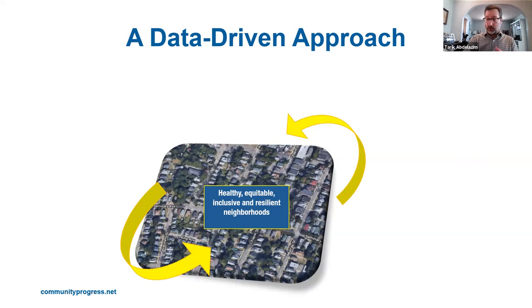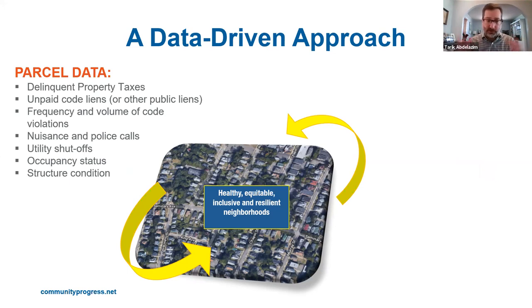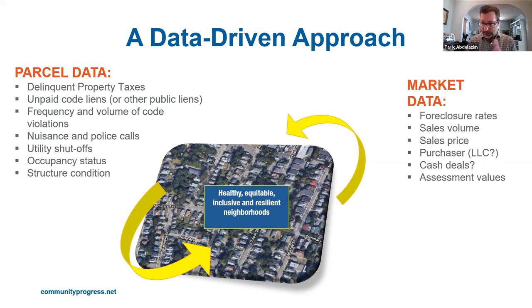Our approach is also data-driven. There are three buckets of data we work with communities on. First, we need to understand parcel data — if we can aggregate, analyze, map, and better understand indicators of distress, communities are in a much better position to tackle systemic vacancy and prevent it proactively. Key indicators include delinquent property taxes, code violations, code liens, and utility shutoffs. If water's been shut off for six months or more, you can generally assume that property is vacant.